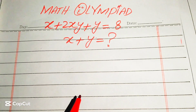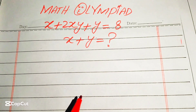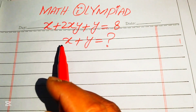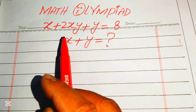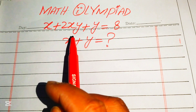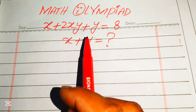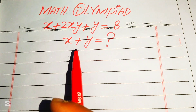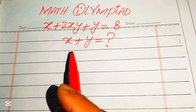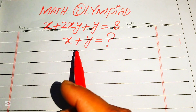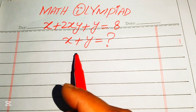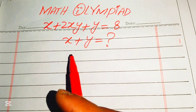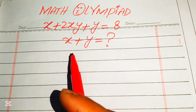Hello everyone, welcome to solving this nice algebra problem. We have x plus 2xy plus y equals 8, and we solve this for the values of x and y. After that we find the sum of x and y.